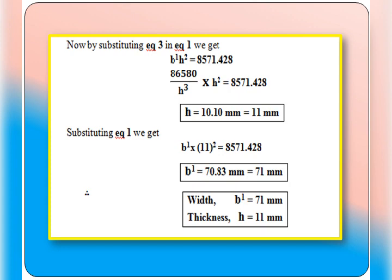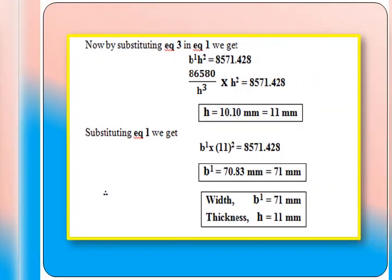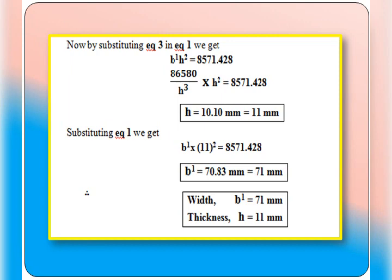Substituting H = 11 mm back into equation one: B dash × 11² = 8571.428, so B dash = 8571.428 / 121 = 70.83 mm, rounded to 71 mm. Therefore the dimensions of the leaf spring are: width B dash = 71 mm and thickness H = 11 mm.